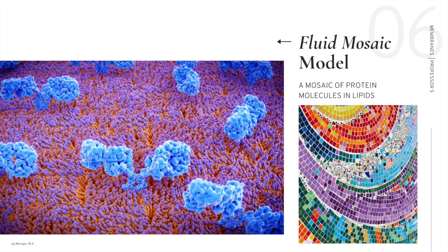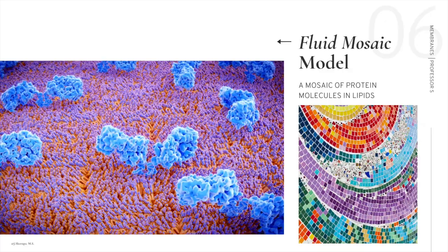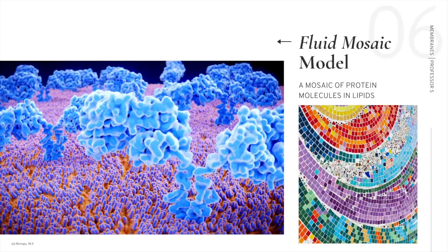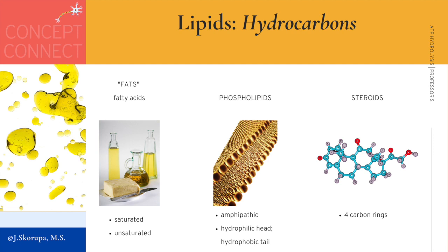Don't mistake this to mean the cell has no control of the fluidity or the mosaic of proteins — proteins are not randomly distributed in the membrane. The cell is a finely tuned piece of organic machinery and everything is highly orchestrated to maintain homeostasis. Movement is free sideways or laterally within the membrane, but there are rare proteins that can actually flip-flop across the membrane from one side of the phospholipid layer to another. Scientists named these flip-ase and flop-ase.